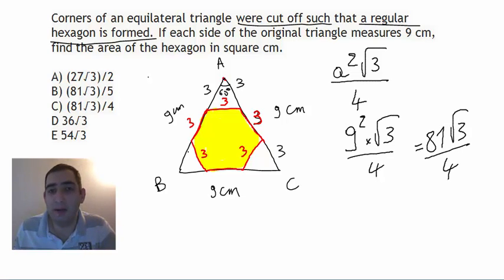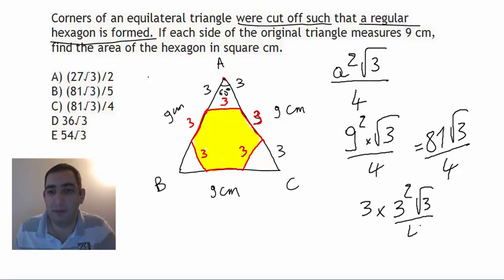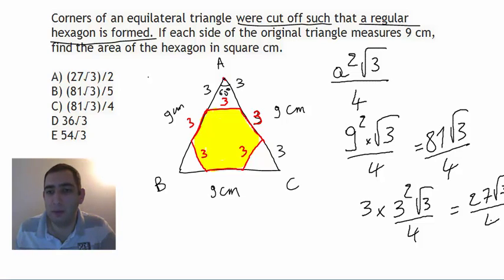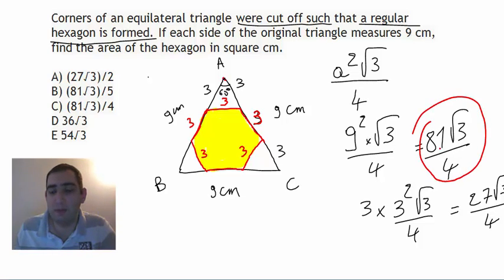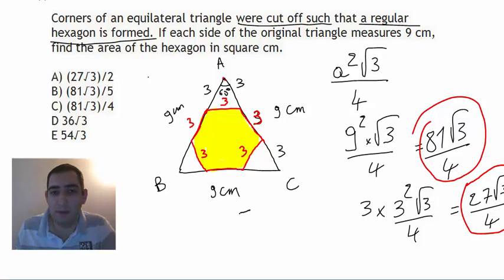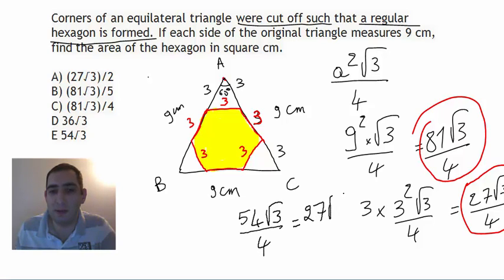For each of the three small equilateral triangles with side 3, the area is 3² × √3 / 4 = 9√3 / 4. Three of them give 27√3 / 4. Subtracting: 81√3/4 − 27√3/4 = 54√3/4, which simplifies to 27√3 / 2.